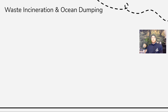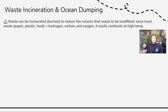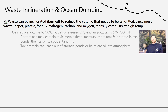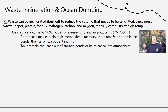We'll wrap up by talking about waste incineration and ocean dumping. Waste can be burned for two main reasons. First, to reduce volume — since most waste is paper, plastic, and food, it's primarily hydrogen, carbon, and oxygen, making it very combustible. Incineration can reduce volume by up to 90%, meaning we can effectively extend landfill capacity. The problem is this releases air pollutants — carbon dioxide, particulate matter, SOx and NOx — just as combustion of any biomass does.